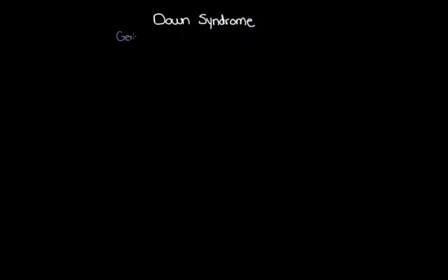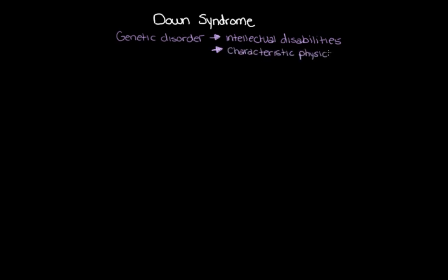Down syndrome, or trisomy 21 as it's sometimes called, is a genetic disorder that causes intellectual disabilities and characteristic physical features. The reason that someone has down syndrome is because they actually have extra genetic material in their cells. Let's check out what's going on inside the cells of someone with down syndrome so that we can understand a bit more about what we mean by extra genetic material.